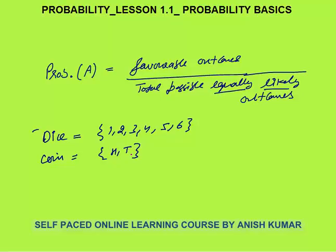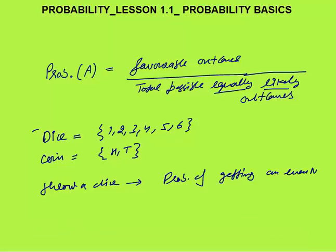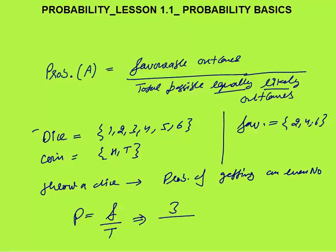So probability is favorable outcomes divided by total possible equally likely outcomes. For example, if you throw a dice, what is the probability of getting an even number? Favorable outcomes are 2, 4, and 6 — so 3 favorable outcomes. Total possible outcomes (the sample space) are 6. So the probability is 3/6.